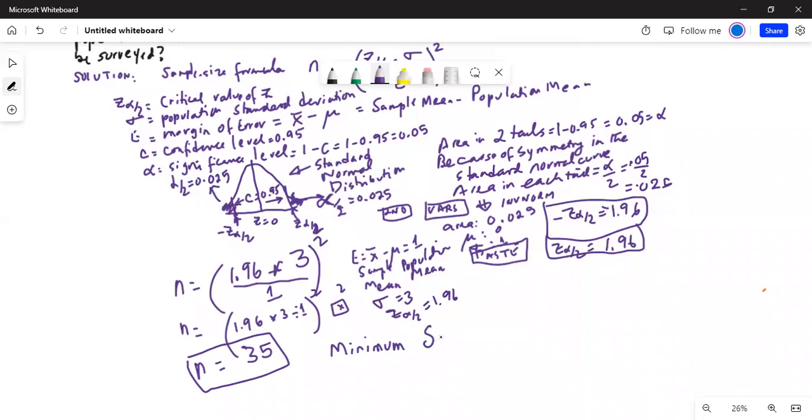Minimum sample size necessary is equal to 35. It's not 34.57; we always round it up to the next higher number.